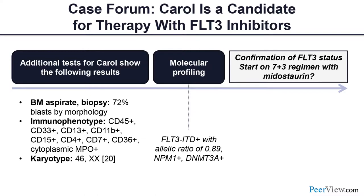An important finding from Dr. Levis presented at ASCO was that while co-mutations affect prognosis, they did not affect the benefit of gilteritinib as therapy. Patients with NPM1 co-mutation and patients with WT1 co-mutation all benefited from gilteritinib equally. So for treatment selection you can use it regardless of co-mutation. We are now looking at a number of important combination approaches targeting known mechanisms of resistance to FLT3 inhibitors — all of these are in phase 1-2 clinical trials currently.